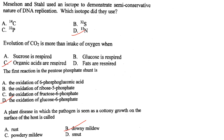The first reaction in the pentose phosphate shunt is the oxidation of glucose-6-phosphate. Answer is option D.